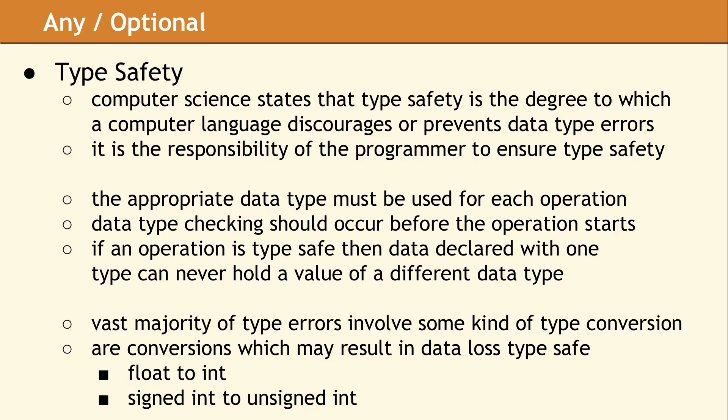If a computer language has type-safety checks, these may occur at compile time or at runtime. A program which never converts values from one data type to another is very likely type-safe. The most common type errors occur when a value needs to be converted from one data type to another.